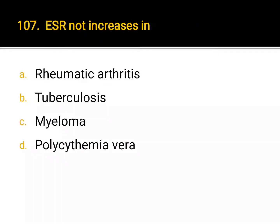ESR increases in: A. rheumatoid arthritis, B. tuberculosis, C. myeloma, D. polycythemia vera. Correct answer: D. Polycythemia vera.